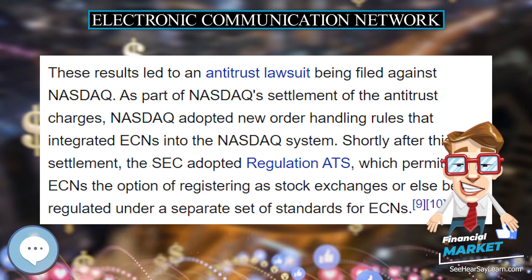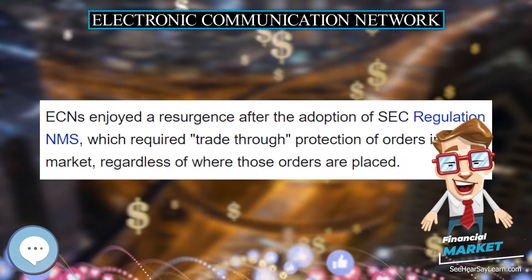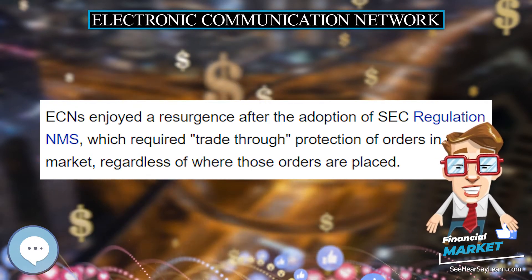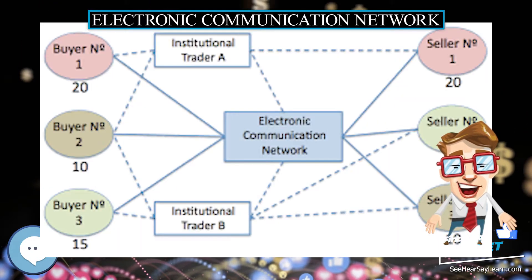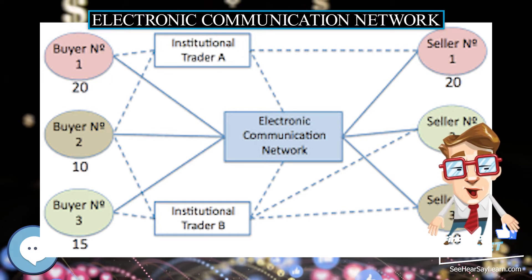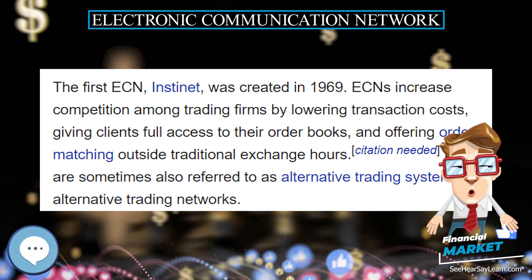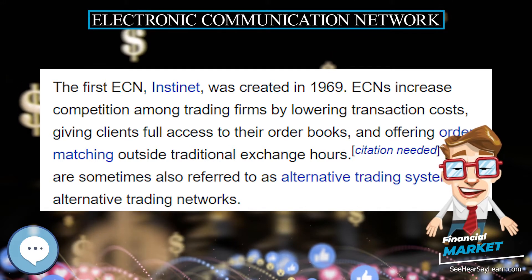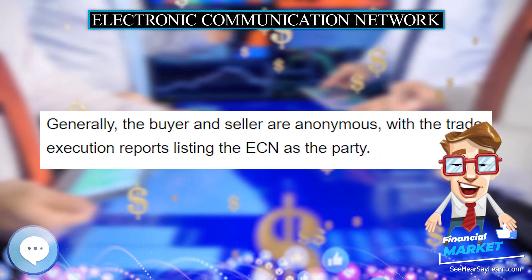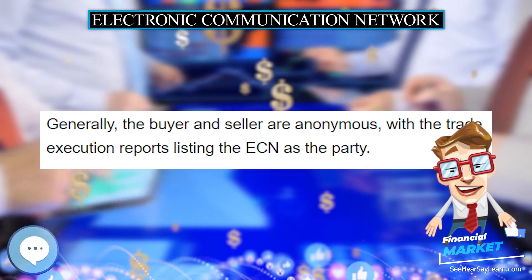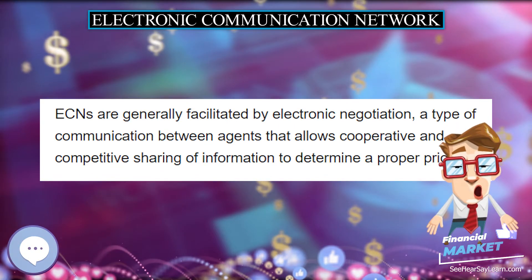In a credit structure, ECNs make a profit by paying liquidity providers a credit while charging a debit to liquidity removers. Credits range from $0.002 to $0.00295 per share for liquidity providers, and debits from $0.0025 to $0.003 per share for liquidity removers. The fee can be determined by monthly volume provided and removed, or by a fixed structure depending on the ECN. This structure is common on the NASDAQ market. Traders commonly quote the fees in millicents or mills — for example, $0.00295 is 29.5 mills.